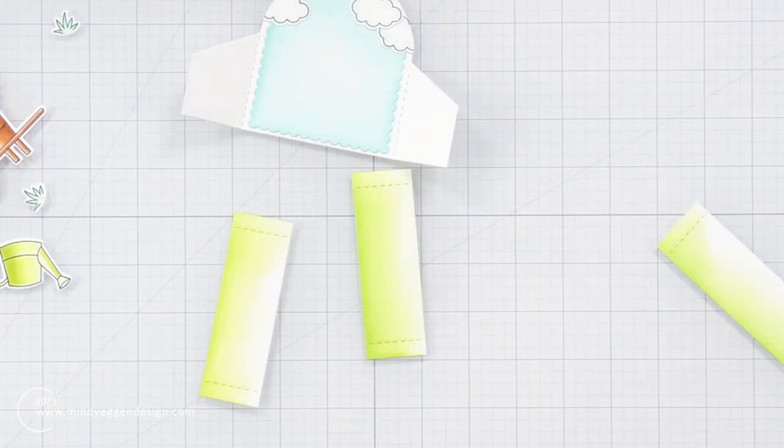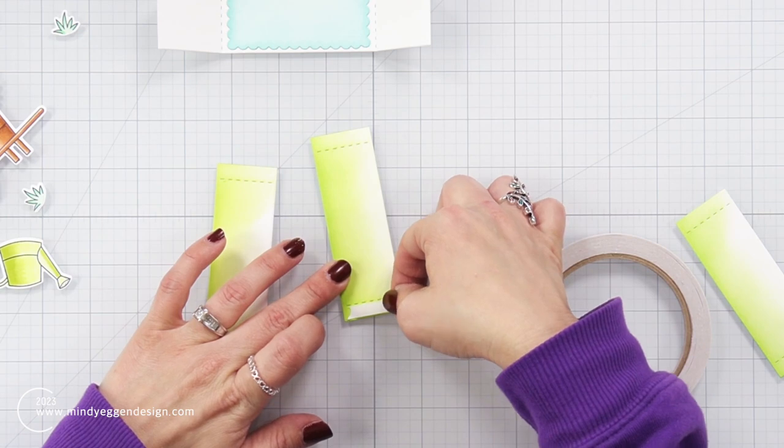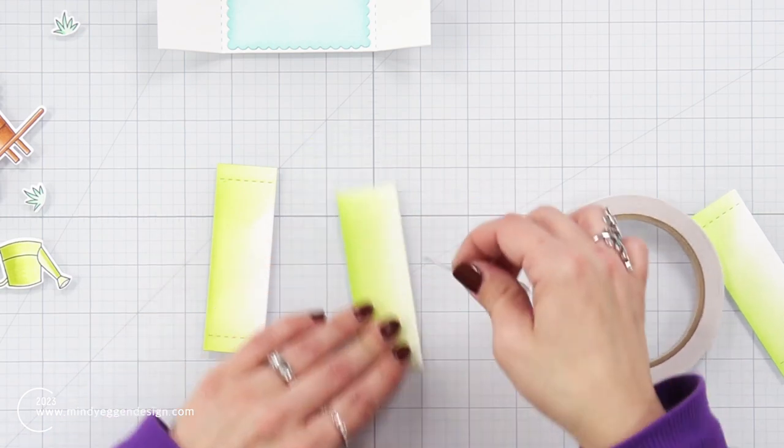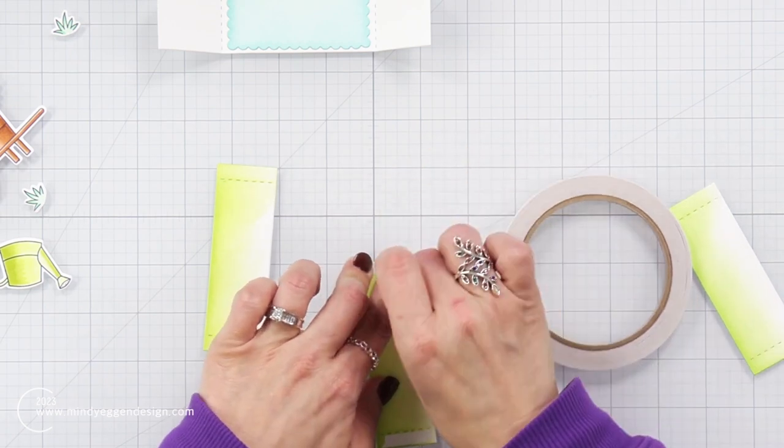Now I have these three rectangle strips. So for these, this also has that dotted line on each edge and that's signifying where our flaps are going to be. So I'm taking some double-sided tape and I'm adding that to each end of these flaps.